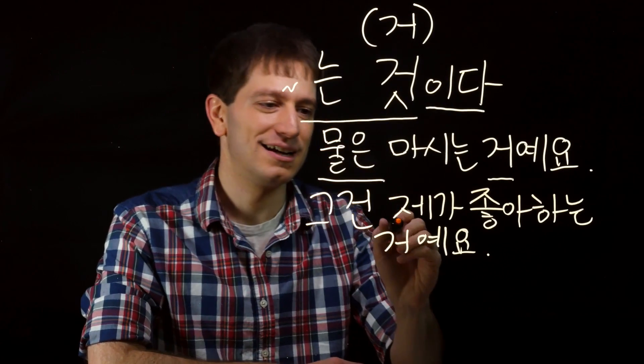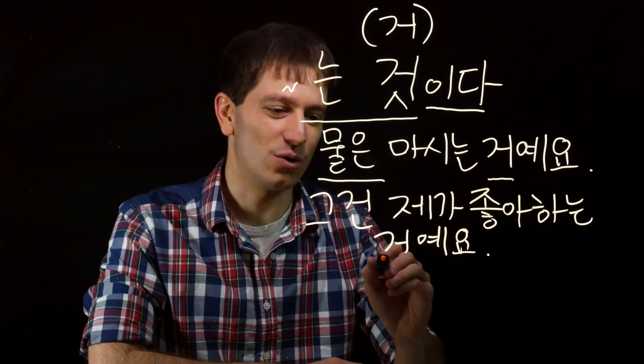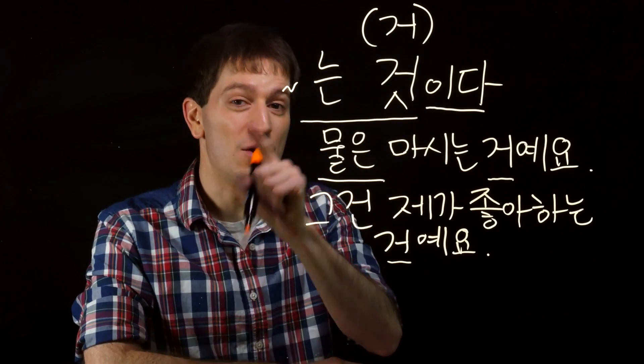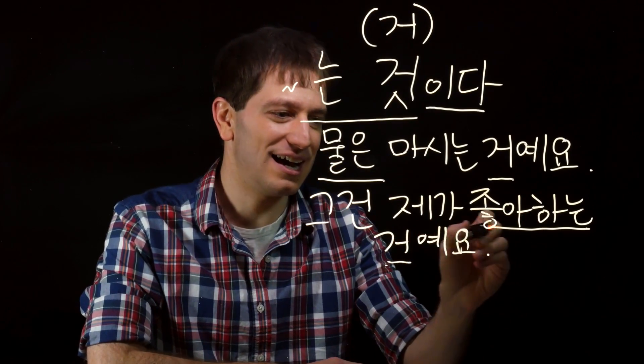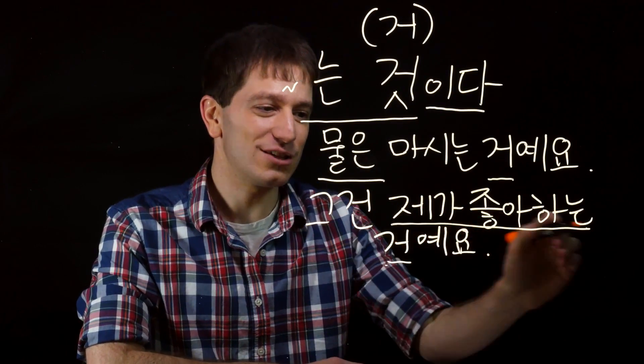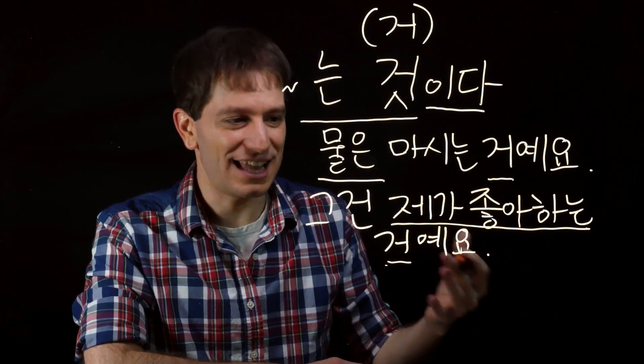Or another example would be this sentence, 그건, as for that thing, 제가 좋아하는 거예요. As for that thing, well, that's a thing that I like. So 그건 제가 좋아하는 거예요. That is a thing that I like.